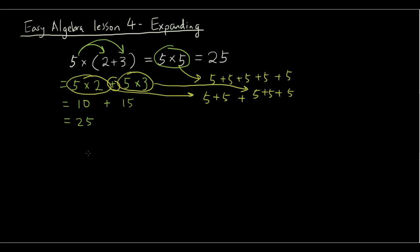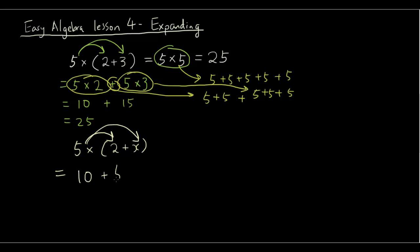Now let's apply this technique to an algebraic expression: 5 times bracket 2 plus x. There is no way to solve it normally as you did with numbers, because there is no way to figure out what 2 plus x equals. So the only thing you can do is expanding — multiply the term in front by each term on the inside. So 5 times 2 is 10, and 5 times x is 5x. You have just expanded this equation.